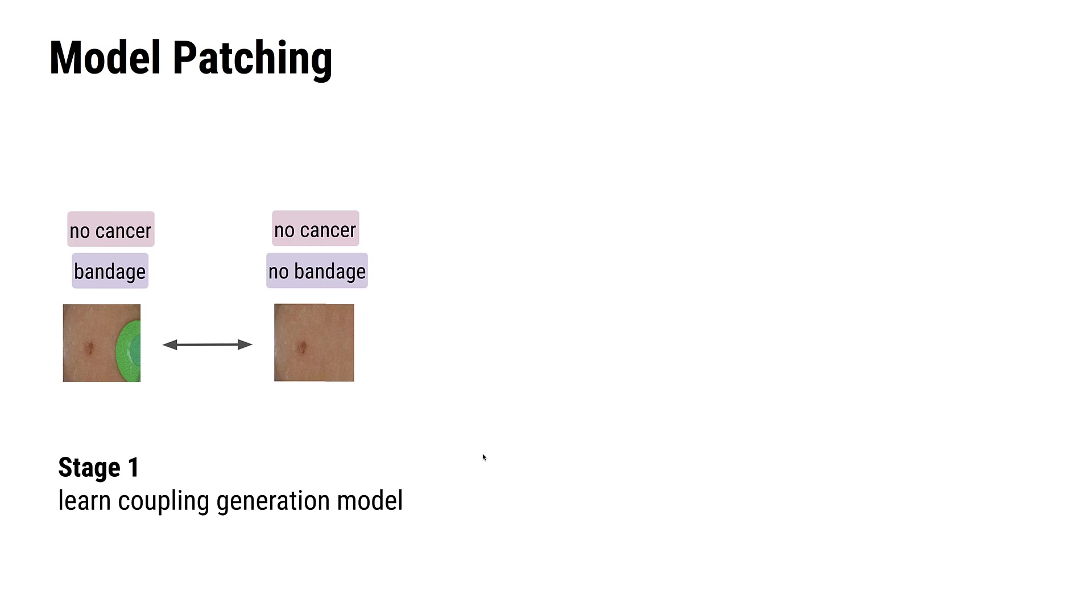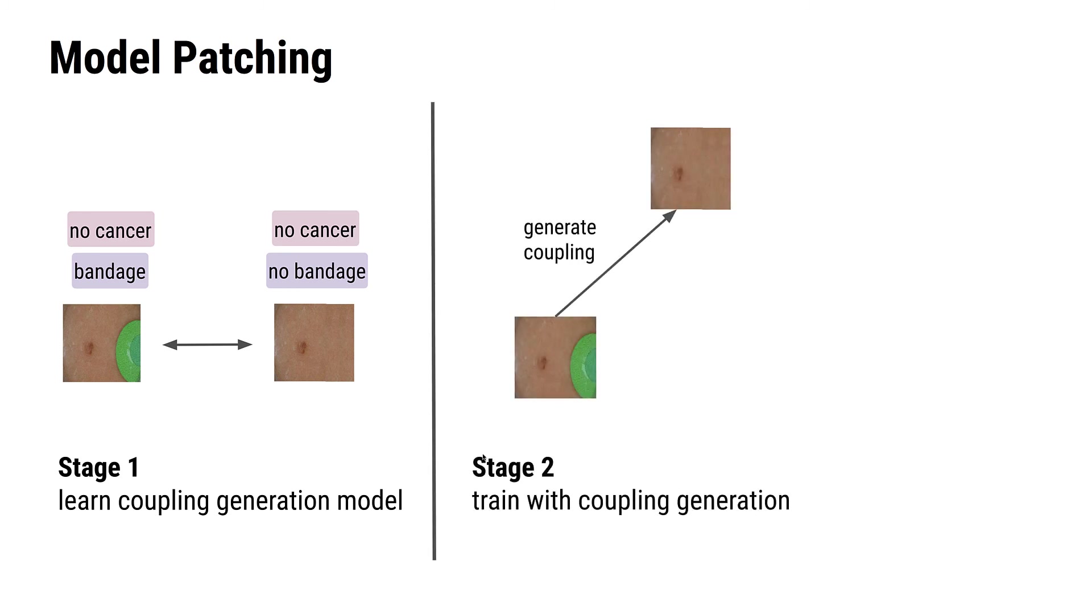This generative model can be used for data augmentation, augmenting an example by generating its coupling. In the second stage, we train a classifier using this augmentation. For any example, we generate its coupling and then enforce that the output of the model on all of the examples in this coupling should be consistent.